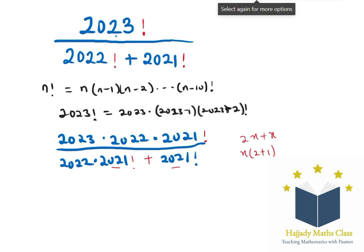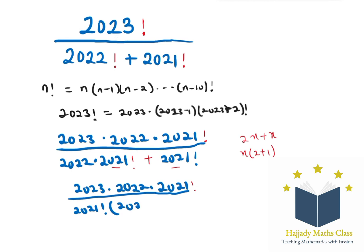My numerator remains the same whereby I have 2023 multiplied by 2022 multiplied by 2021 factorial. How can we factor out 2021 factorial? The denominator is going to be the same factor. So factoring out 2021 factorial I can easily have in my parentheses 2022 plus 1 which can easily be multiplied out.